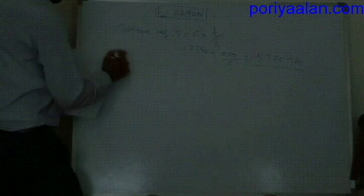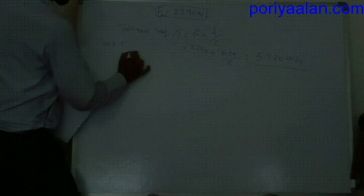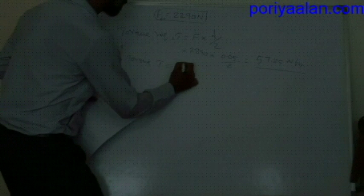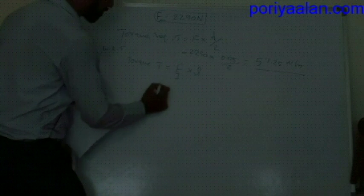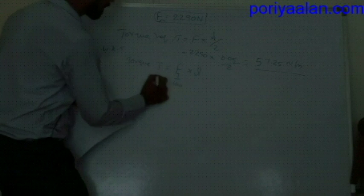We know that torque T = F1 × L, where F1 is the applied force at the lever end. So 57.25 = 100 × L, giving L = 0.573 m. The length of the lever is 0.573 m.